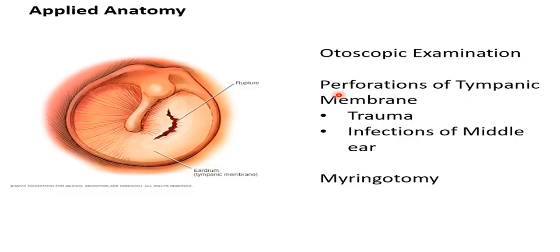Perforations of the tympanic membrane can occur due to trauma — hence the warning never to insert pointed objects into the ear. The tympanic membrane can also rupture due to infections of the middle ear: when the middle ear cavity accumulates pus and pressure builds, the pus escapes through the weakest wall, which is the tympanic membrane.